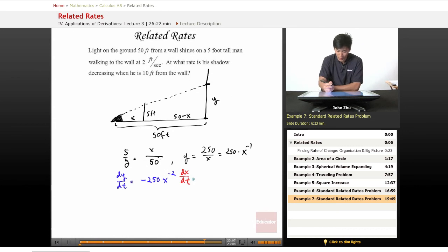Let's go ahead and plug in dx dt because we know that the man is walking to the wall at two feet per second. So x is changing at a rate of 2 feet per second, which is dx dt. So this expression becomes negative 250 times x to the negative 2 times 2, which equals negative 500 over x squared.